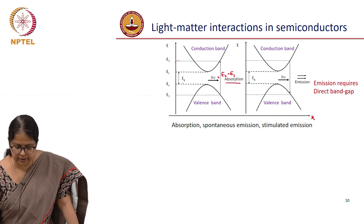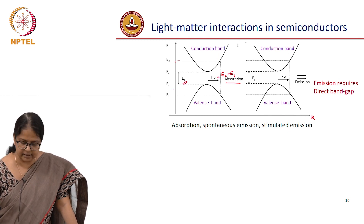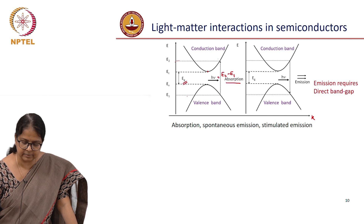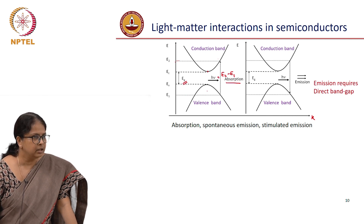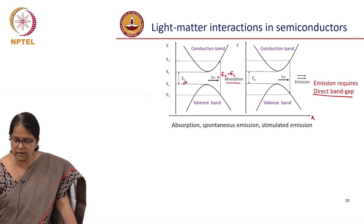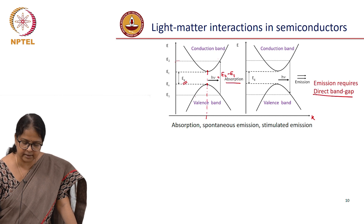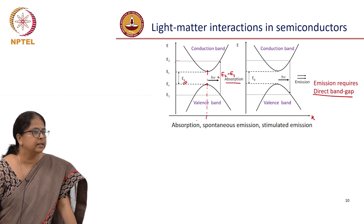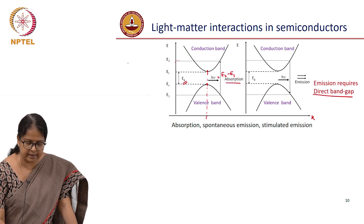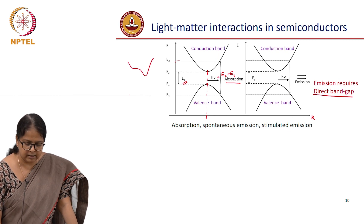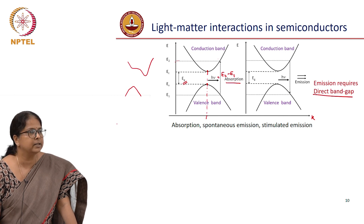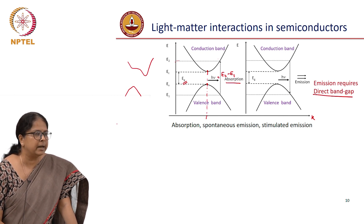The energy of the photon that is emitted must be equal to E2 minus E1, where E2 is the energy occupied by the electron in the conduction band and E1 is the energy occupied by the hole in the valence band. We know the definition of band gap — it is the difference in energy levels between the lowest energy in the conduction band and the highest energy in the valence band. You also know the concept of direct band gap, where the momentum corresponding to the lowest energy in the conduction band and the highest energy in the valence band are the same. You could have indirect band gap materials, but we are not talking about indirect band gap materials as far as emission is concerned.